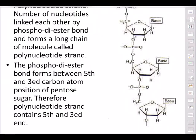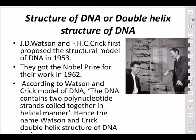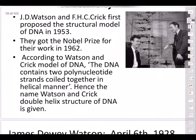A nucleotide is a combination of the three components — nitrogenous base, sugar, and phosphate (NPS). The phosphodiester bond forms between the fifth and third carbon atom positions of the pentose sugar, so a polynucleotide strand has 5' and 3' ends. Watson and Crick first proposed the structural model of DNA in 1953.